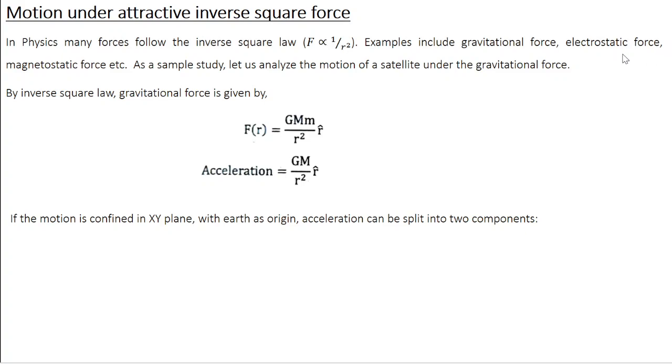Similarly, if you consider the electrostatic force between two charges Q1 and Q2, it is given by (1/4πε₀) Q1 Q2 / R². Similarly, the magnetostatic force of a current carrying element also has a 1 over R² dependence. So these kind of forces are known as inverse square forces.